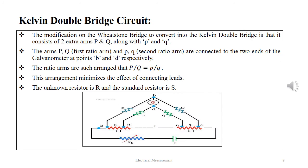The modification of the Wheatstone bridge to convert it into a Kelvin double bridge consists of two extra arms P and Q, along with small p and small q. The arms P and Q (first arm ratio) and small p and small q (second arm ratio) are connected to the two ends of the galvanometer at points B and D respectively. The ratio arms are arranged such that P/Q = p/q, which minimizes the effect of connecting leads. The unknown resistor R and the standard resistor S are already in the circuit.